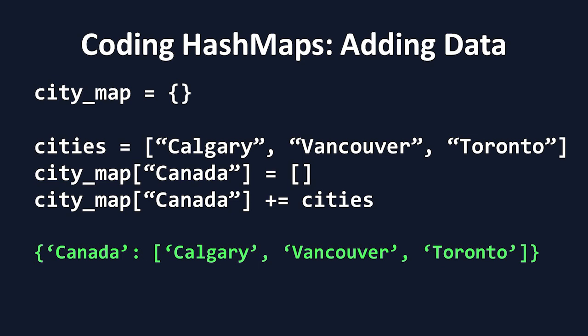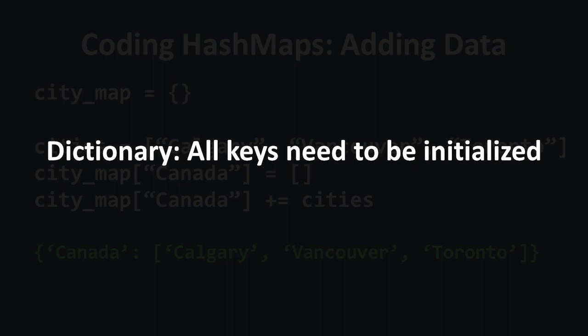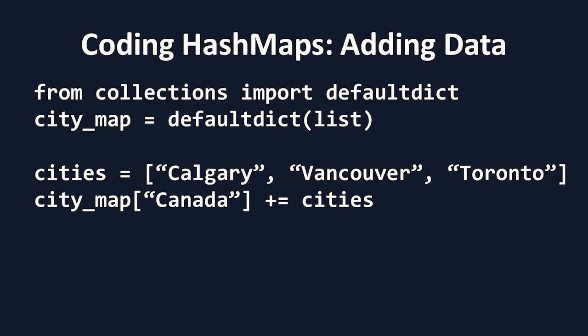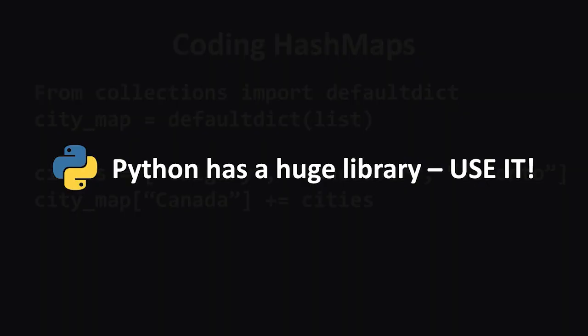Here's a neat trick. To avoid having to initialize an empty array for your keys every single time, we can use a specific type of dictionary in Python called a defaultdict, which will have an empty array or other type of data assigned to a key by default. I highly recommend taking advantage of defaultdicts for solving coding problems, as it's an incredibly useful feature that will help you avoid unnecessary mistakes.